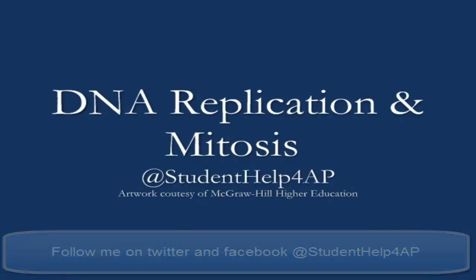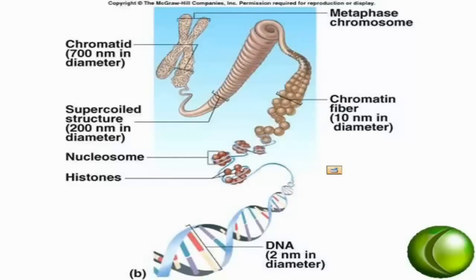We're talking about cell cycle in this video, and we're going to specifically be talking about mitosis, which is the division of the nucleus in a somatic cell. A somatic cell is a cell that is not a reproductive cell — it is just a cell of the body like a skin cell or a liver cell. Before we talk about the actual division of the nucleus, we need to first start talking about what the cell does to prepare for division.